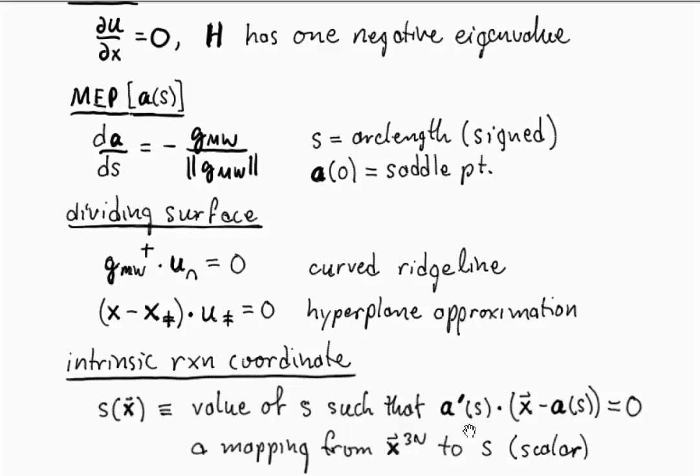This is the minimum energy path tangent. You ask, for what value of S does that tangent dotted into the displacement from the path equal to zero? So this is point off the path minus a point on the path at a certain value of S, and I want to look at the tangent at that same value of S and require that these two things be perpendicular. And what that allows me to do is to develop this mapping that really is a remarkable dimensionality reduction that goes from 3N degrees of freedom, potentially a very high dimensional space, all the way down to one scalar intrinsic reaction coordinate.